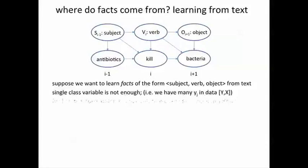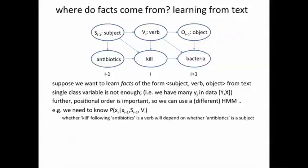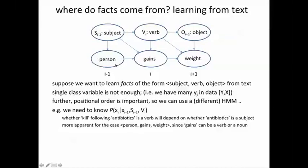In addition, one needs to deal with positional order. So we can use a different graphical model like the hierarchical Markov models or other types of models. We need to know the probability of x of i, that means any particular word occurring given the previous word, the class of the previous word, and the class of the present word. For example, the probability that kill following antibiotics is a verb will depend on whether antibiotics is a subject. The situation is probably more apparent for the example, person gains weight where the word gains can be a verb or noun. So whether or not gains is a verb would depend on whether or not person is classified as a subject.